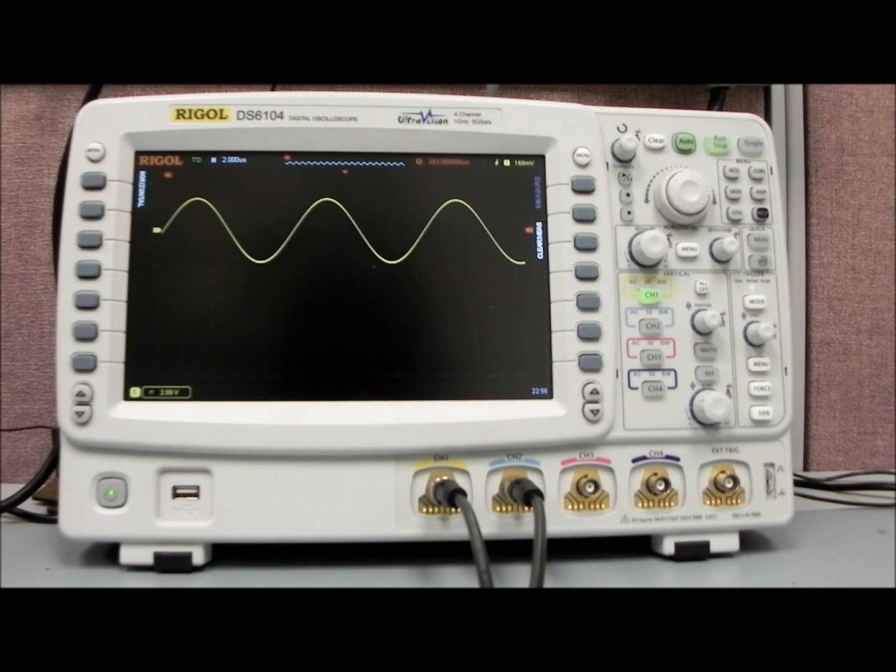And now what I'd like to do is I have a 100 kilohertz sine wave. I'm going to modulate that at, let's say, what's my frequency here? I'm going to modulate that at 10 hertz.